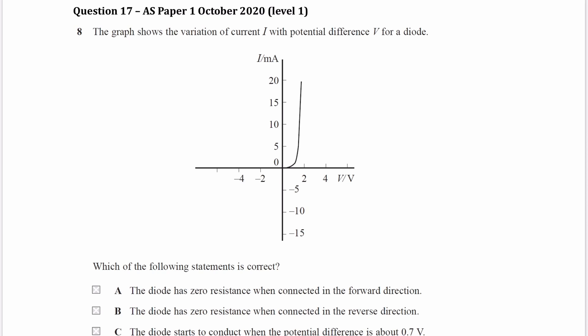So for the first one, the diode has zero resistance when connected in the forward direction. Well, if it had zero resistance, then the current would be infinite. And that's not the case, the current is not infinite. So that wouldn't be true. So it can't be A.